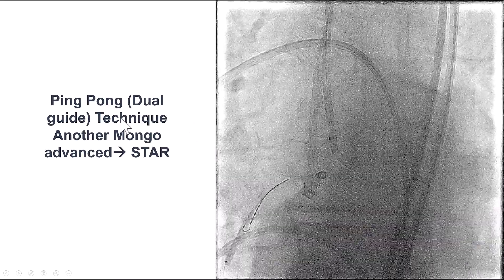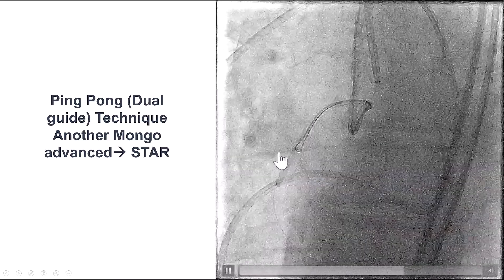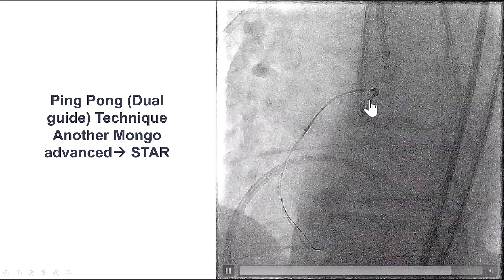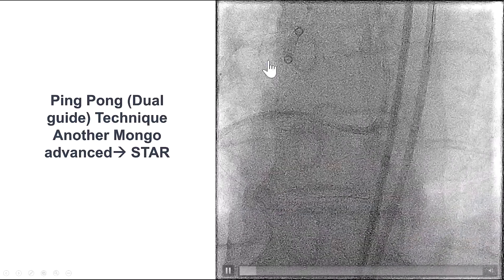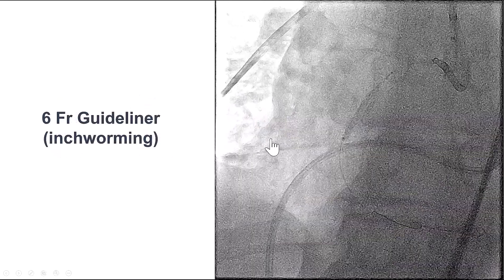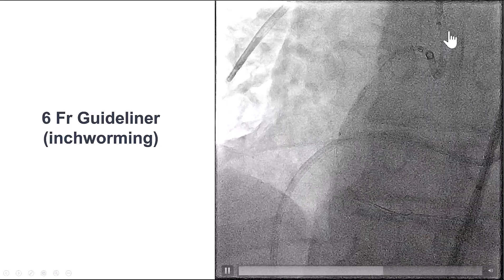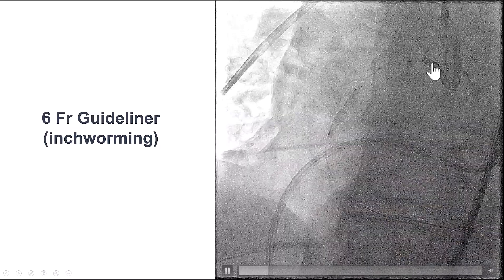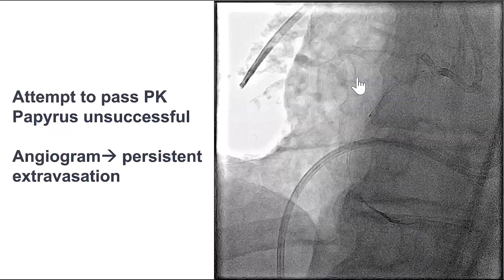We used two guide catheters in the ping-pong technique. The original guide catheter was used to place a blocking balloon in the right coronary artery. We brought in a second guide catheter, then used another Mongo wire to advance further down into the vessel, and used a balloon over the second guide catheter to advance a guide extension — so now we had a second guide along with a guide extension being inch-wormed into the vessel.